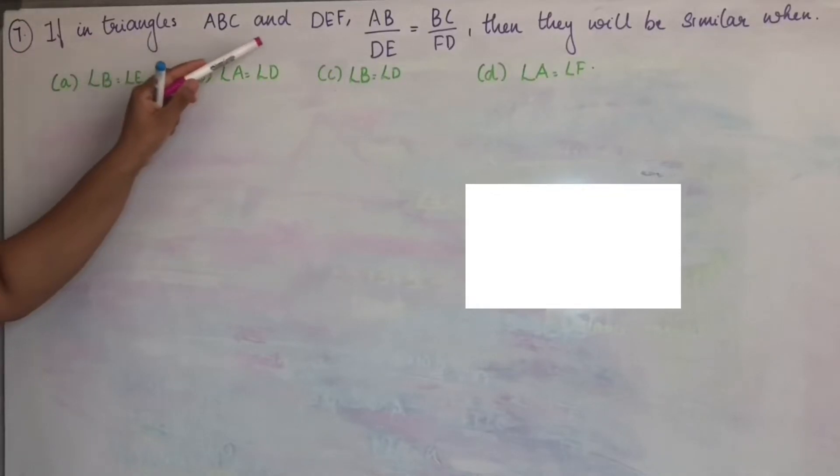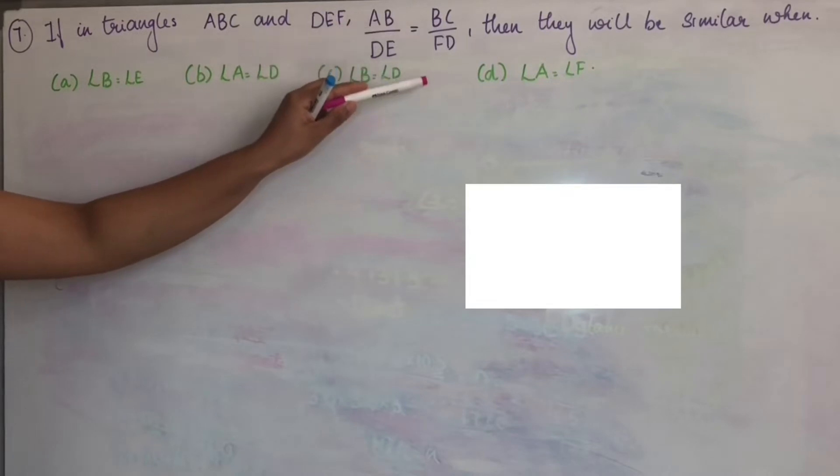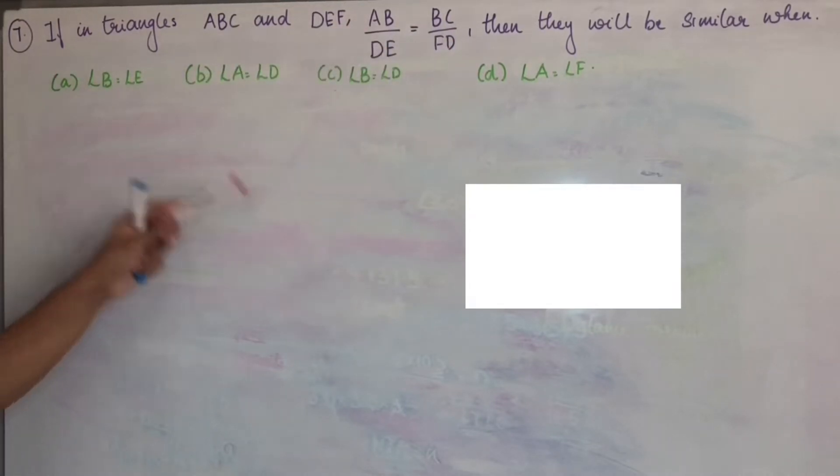If in triangles ABC and DEF, AB by DE equal to BC by FD, then they will be similar when options.